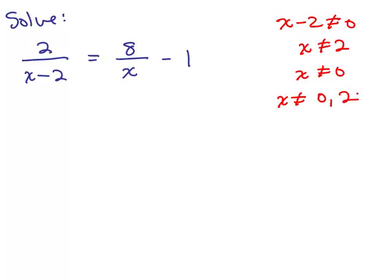Keep in mind x cannot be either of those numbers. If we go through the problem and get one of those numbers for x, they really aren't going to be solutions. We've got two denominators, and there are a couple of ways we could do this. We can multiply all terms on both sides by the least common denominator. The least common denominator is x times x minus 2.